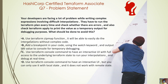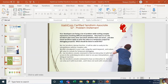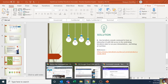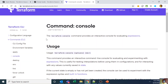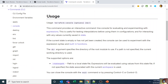So the correct answer is C — use the Terraform console command to have an interactive UI with full access to the underlying Terraform state to run interpolations and debug in real time. Looking at the documentation: the Terraform console command provides an interactive console for evaluating expressions, useful for testing interpolations before using them in configuration and for interacting with values currently saved in state.